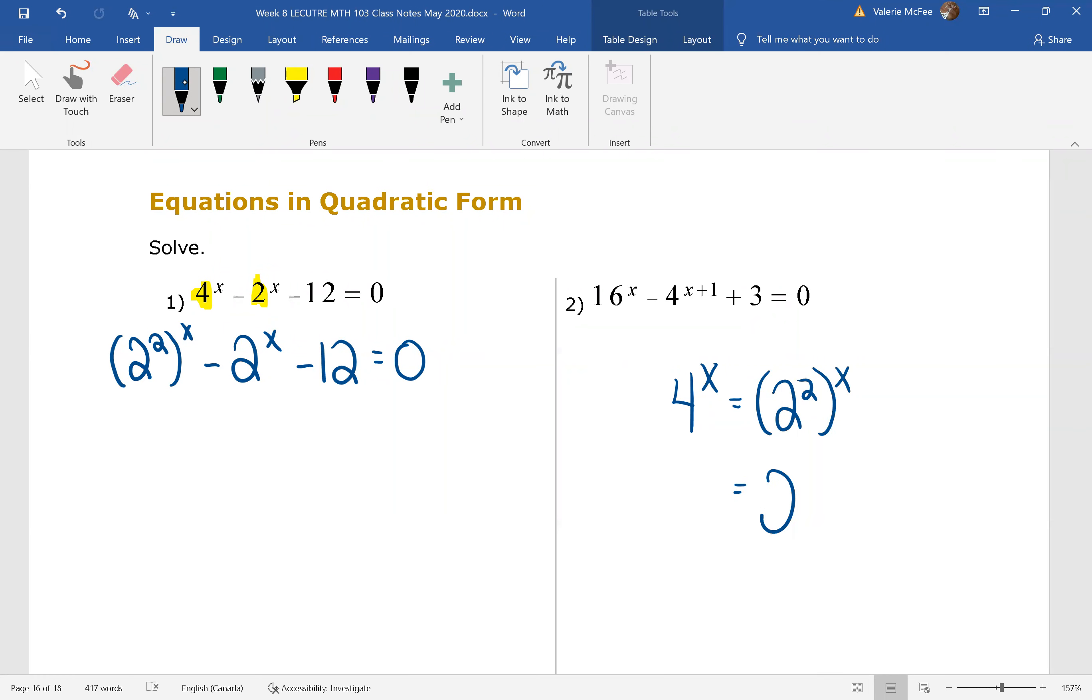Remember that when you're raising a power to a power, you multiply the exponents. And when we multiply, order doesn't matter. That means I could write this as 2 to the power of x all squared. That's important because it means that I can write each of these using a different variable.